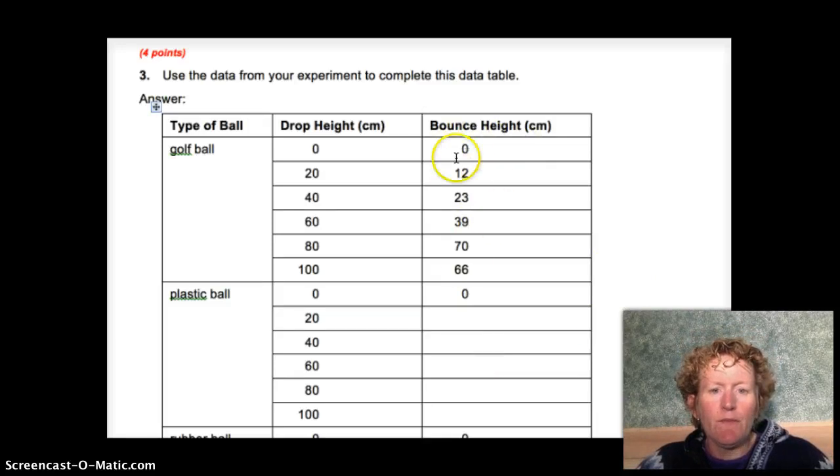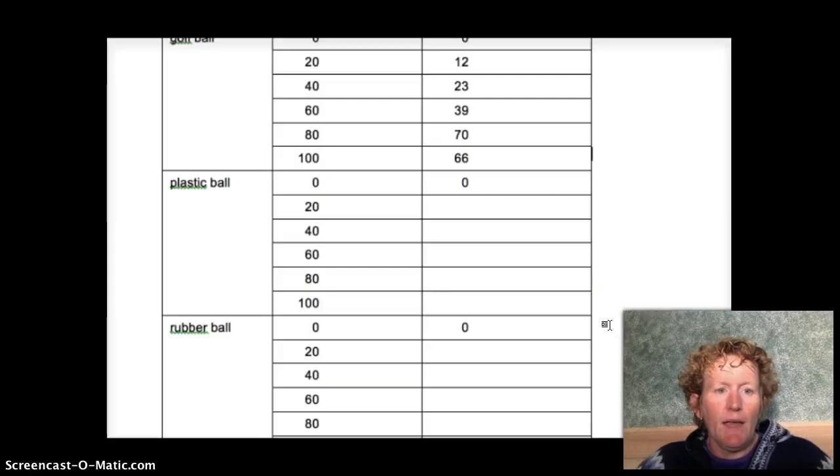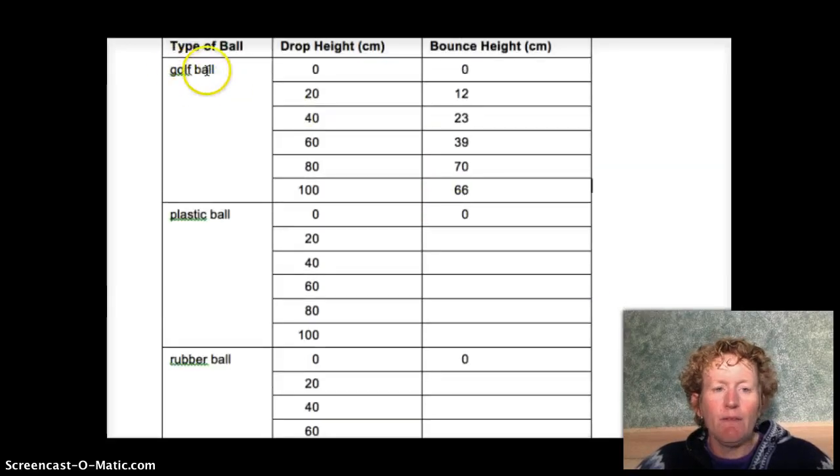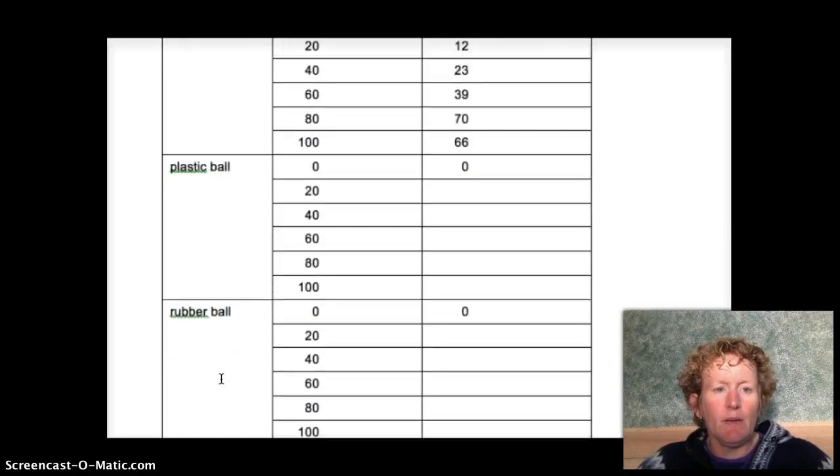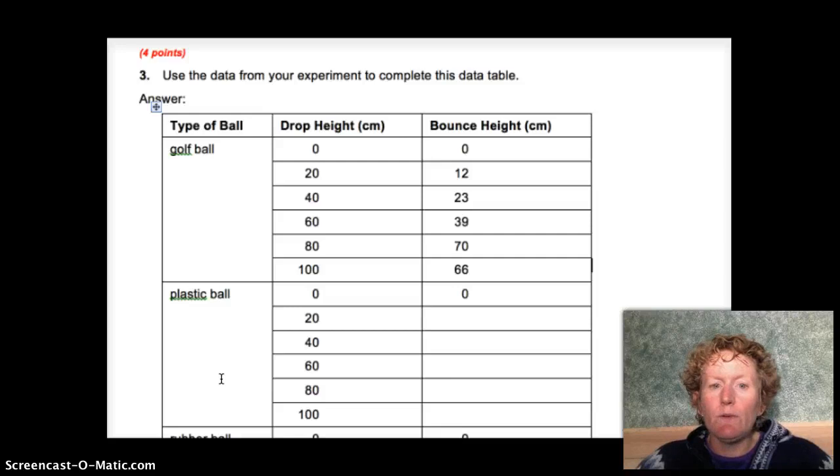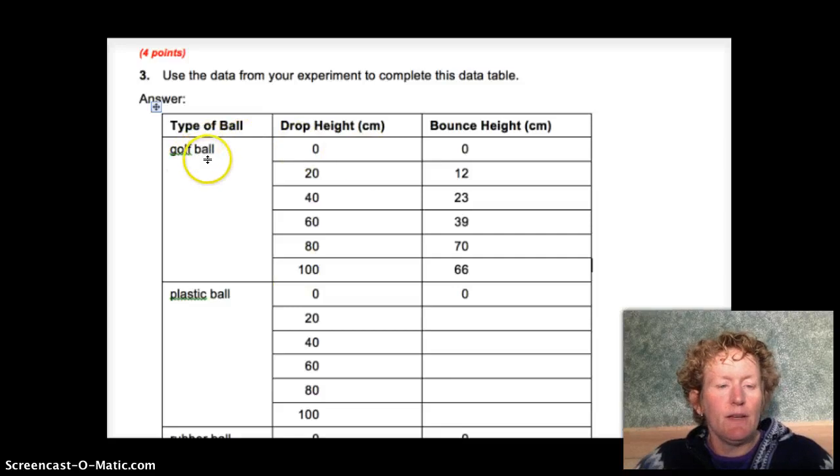Let's go graph this first set of data. Your graph is going to have a line for each type of ball. So you're going to have a line for the golf ball, a line for the plastic ball, a line for the rubber ball, and a line for the clay ball. So four different lines. We're going to go do the first line right now.